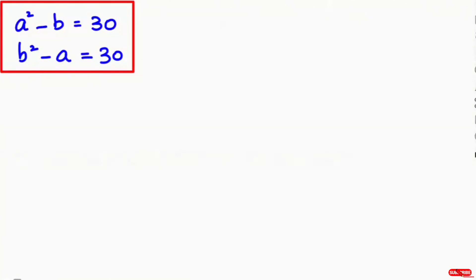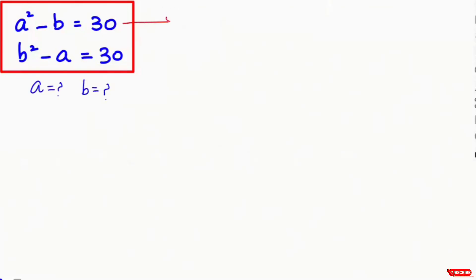Hi everyone. In this video I'm going to solve this algebra equation. We have a squared minus b equals 30, and b squared minus a equals 30. Here we need to find out the values of a and b. I'm going to name the first equation as equation 1 and the second as equation 2.